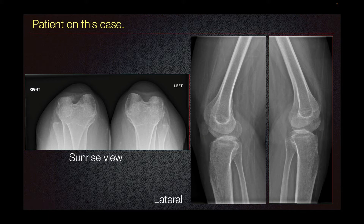Nail patella syndrome is associated with a hypoplastic patella, a dysplastic patella, or in some cases an absent patella. This can contribute to patellofemoral pain syndrome due to dysfunction in the patellofemoral compartment.